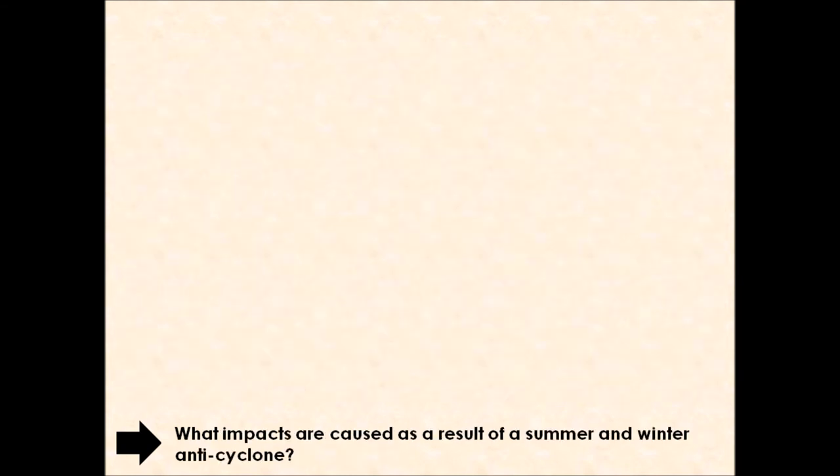Now we understand the characteristics and similarities and differences of summer and winter anticyclones, we need to think about impacts, the impacts that are caused as a result of summer and winter anticyclones. Some of these impacts can be positive, some can be negative. An impact is what happens as a result of something happening, and in this case we're looking at anticyclones, that area of high pressure.